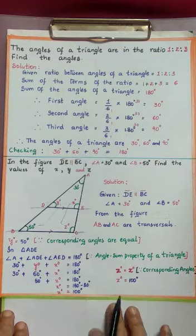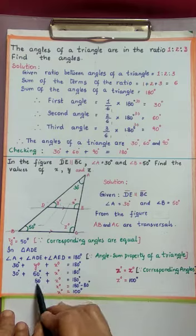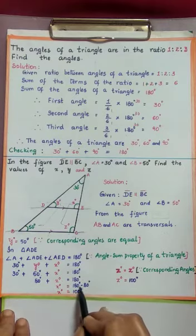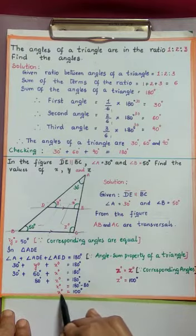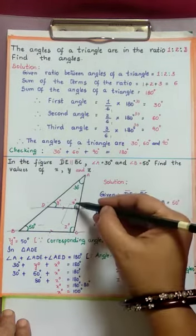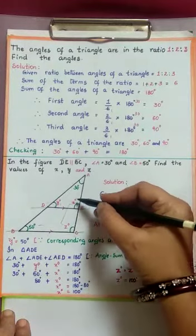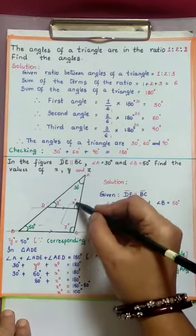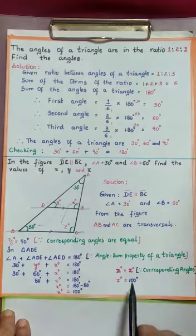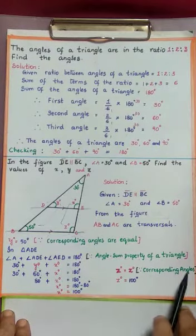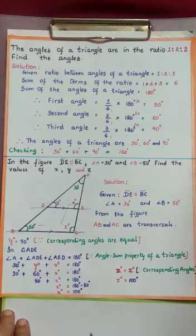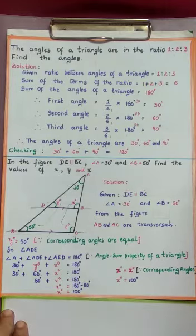To find X degrees, we transpose to the right side: 180 degrees minus 80 degrees, which is 100 degrees. So X is 100 degrees. After getting X, since X and Z are corresponding angles, we equate: Z degrees equals X degrees. Since corresponding angles made by the transversal are equal, Z is also 100 degrees. This is the way we can find the three unknowns from the figure.